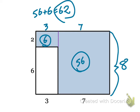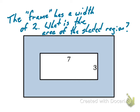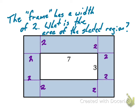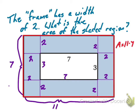Let's look at one more problem. The frame has a width of two — what's the area of the shaded region? I'm going to sketch in the widths. I know all of these are two, so these are two-by-two squares. So if this is two, this is three, and two — two plus three is five, plus another two is seven. So the whole length is seven. And then two plus seven plus two is eleven. The area of this entire red rectangle is eleven times seven — and eleven times seven is seventy-seven.